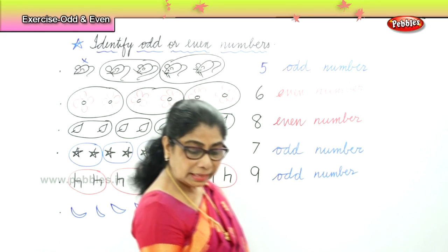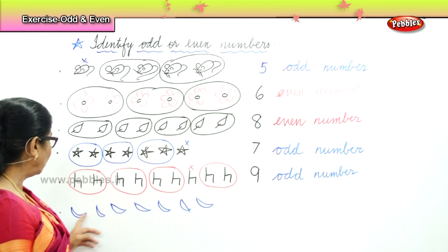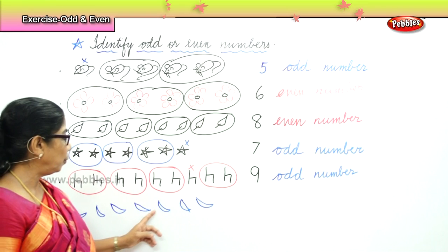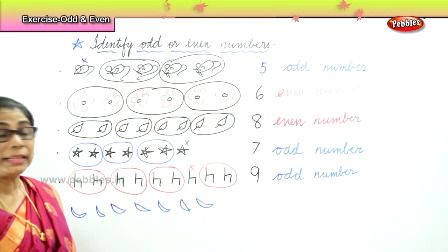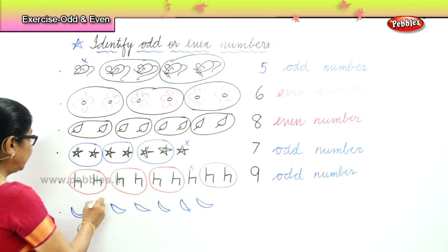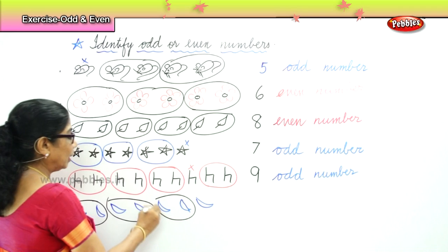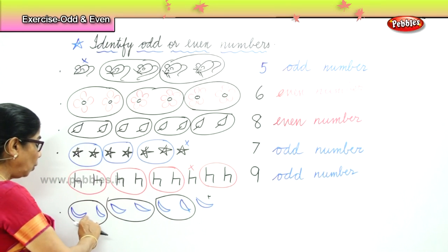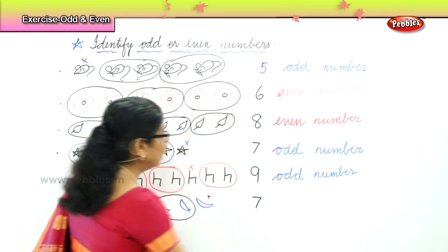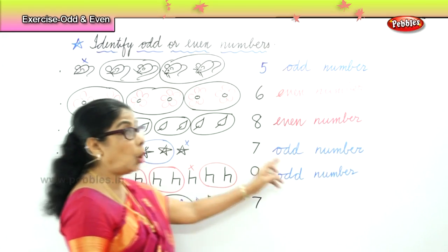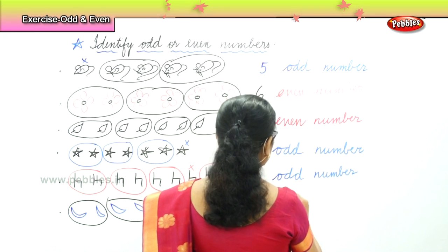Now we have here some moons. One, two, three, four, five, six, seven. How many? Seven. We're going to pair them up: one, two; one, two; one, two. And we have here one left. What's the total number? One, two, three, four, five, six, seven. Again we have number seven. So number seven is an odd number — there is one moon left out.